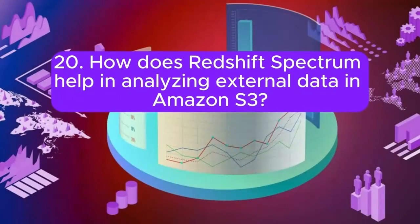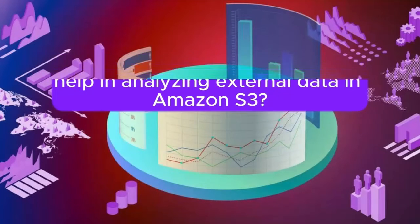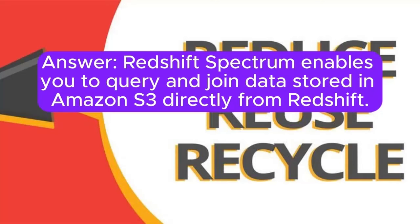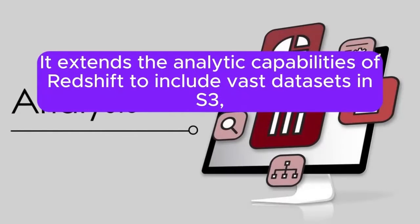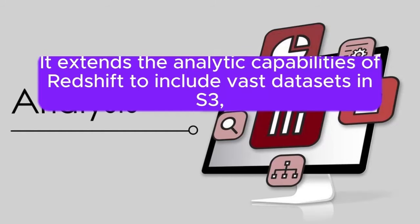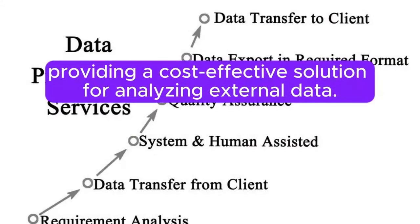Question 20: How does Redshift Spectrum help in analyzing external data in Amazon S3? Answer: Redshift Spectrum enables you to query and join data stored in Amazon S3 directly from Redshift. It extends the analytic capabilities of Redshift to include vast datasets in S3, providing a cost-effective solution for analyzing external data.